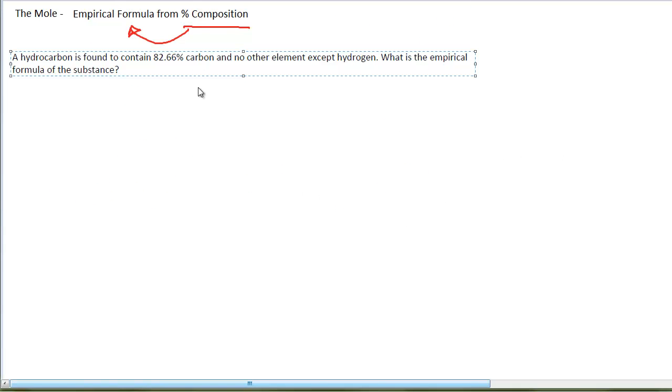All right, here's our problem. A hydrocarbon, that's a compound that contains carbon and hydrogen only, is found to contain 82.66% carbon and no other element except for hydrogen. What is the empirical formula of the substance?